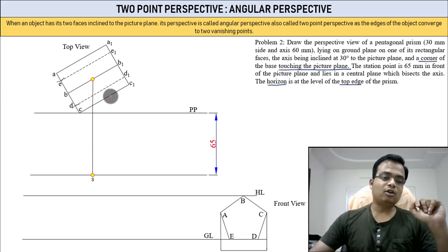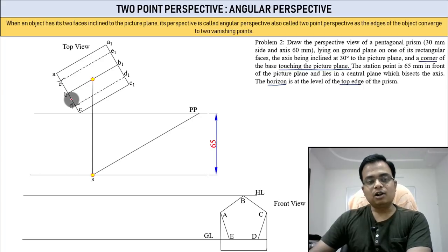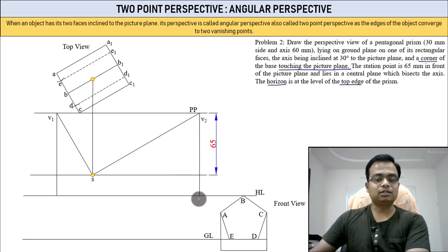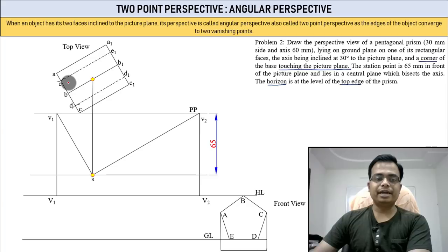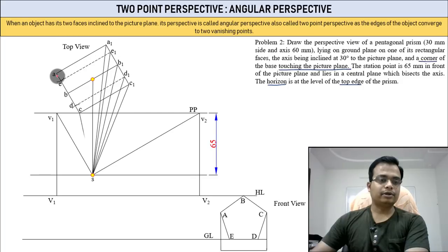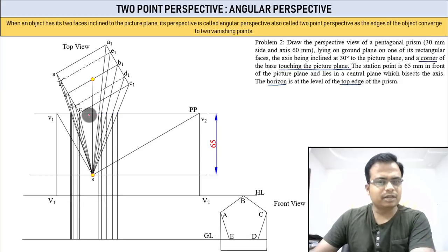All 10 points need to be joined to the station point. But first, locate the vanishing points. Align the mini drafter along CC1, tighten the screw, bring it to S, and draw a line. Then align along AC, bring to S, and draw a line — that gives V1 and V2.